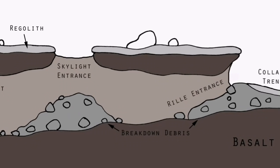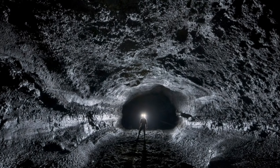You can see the lava tube in the lighter beige color, with a skylight entrance opening at the top — this is where the solidified lava has formed a tube-like structure. In this image you can see one of the real lava tubes on Earth, probably in Hawaii or somewhere in the Dakotas, or maybe Oregon.